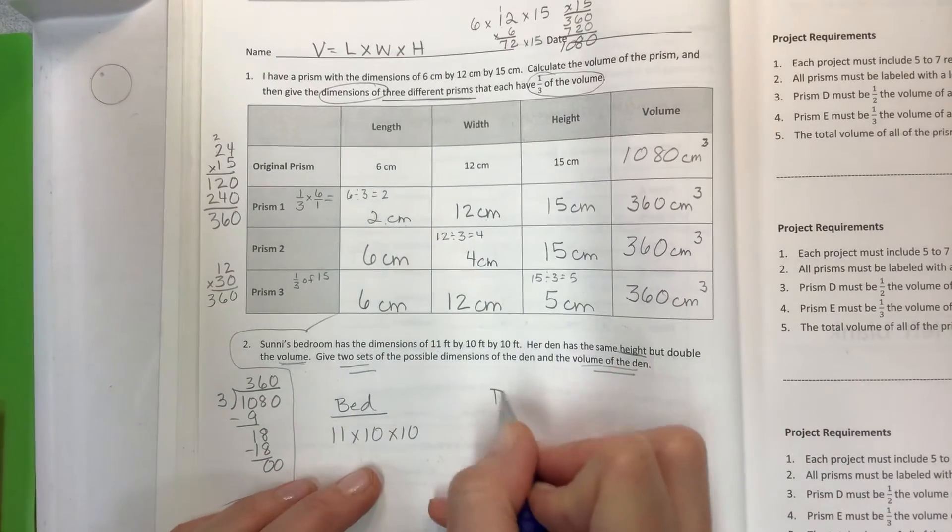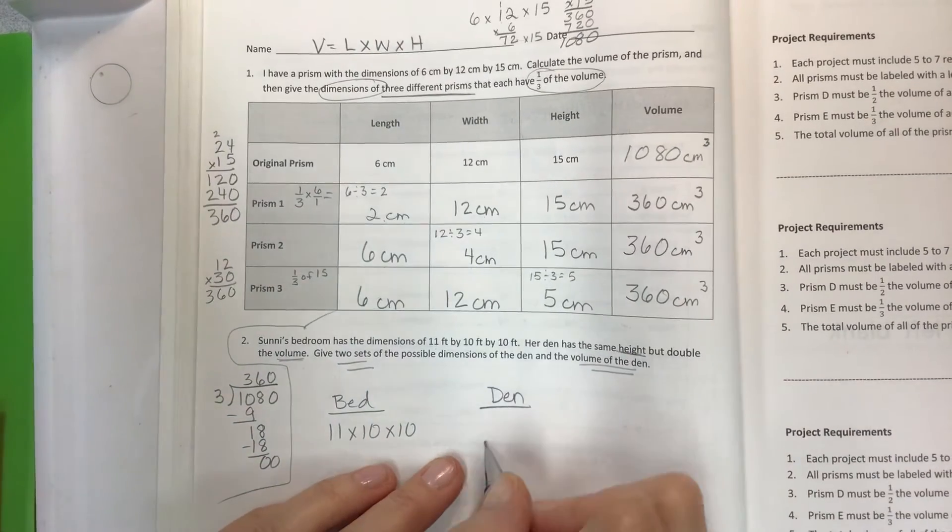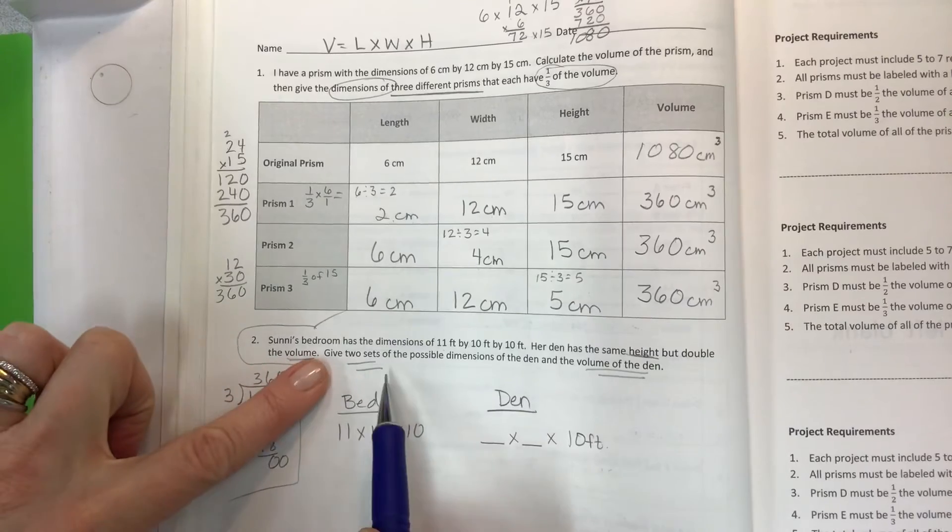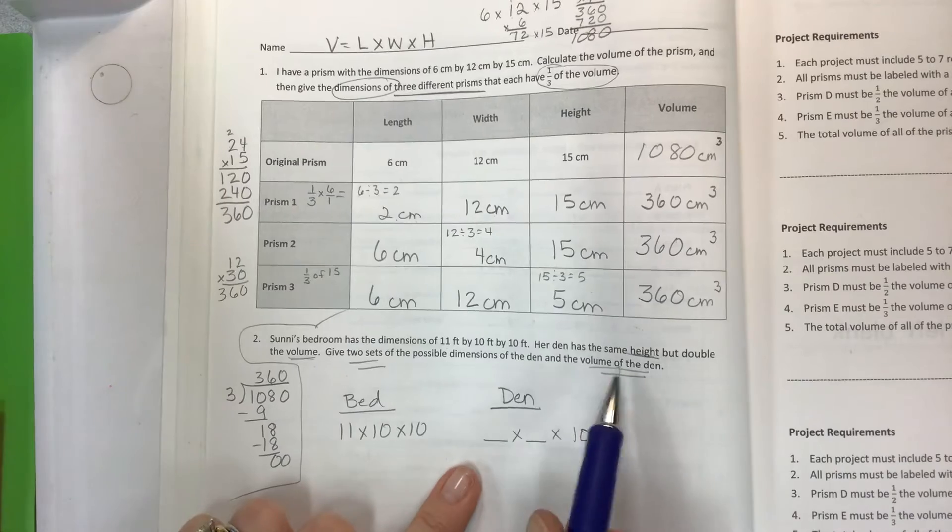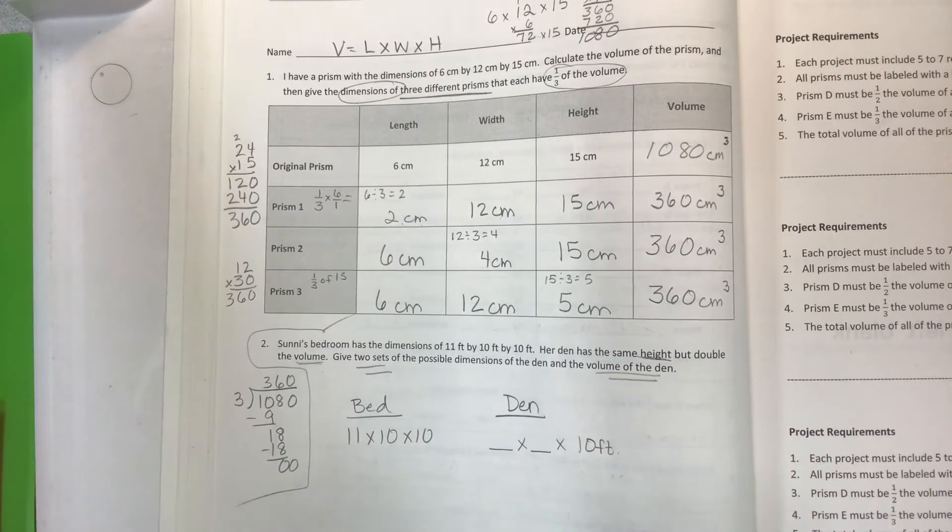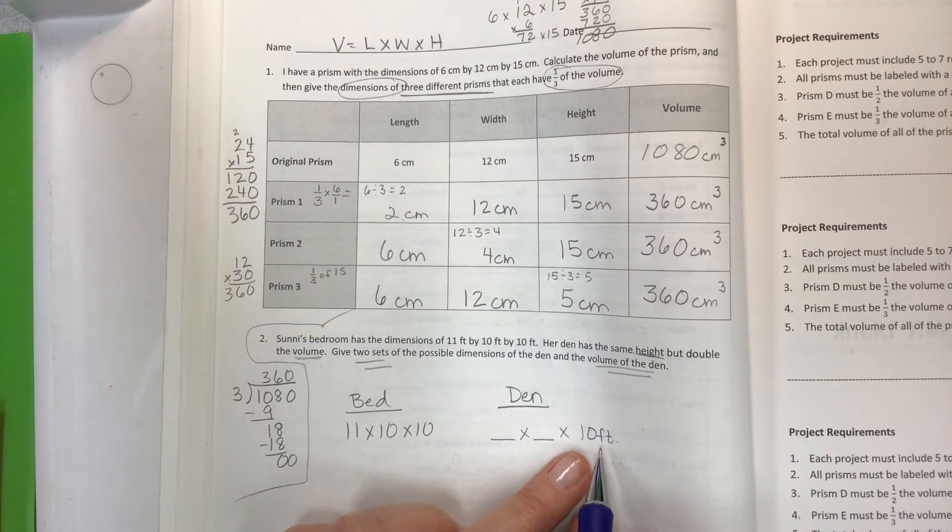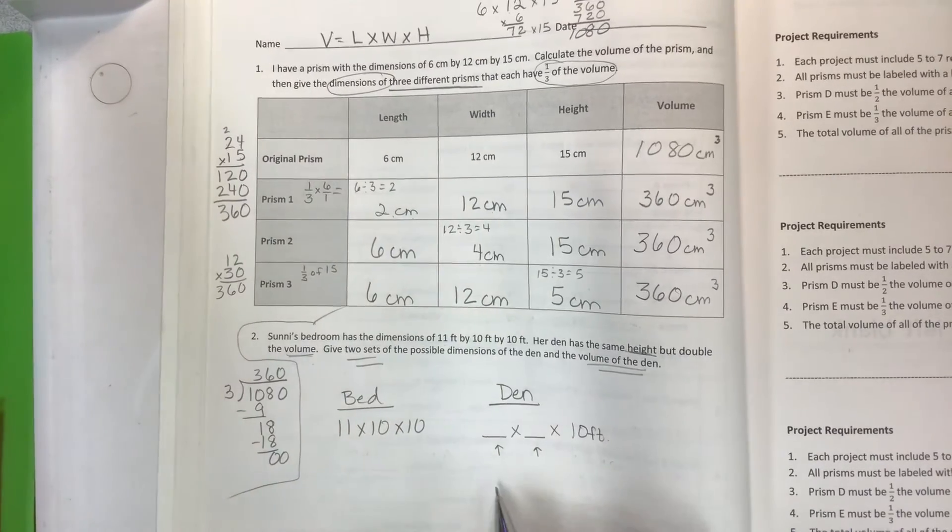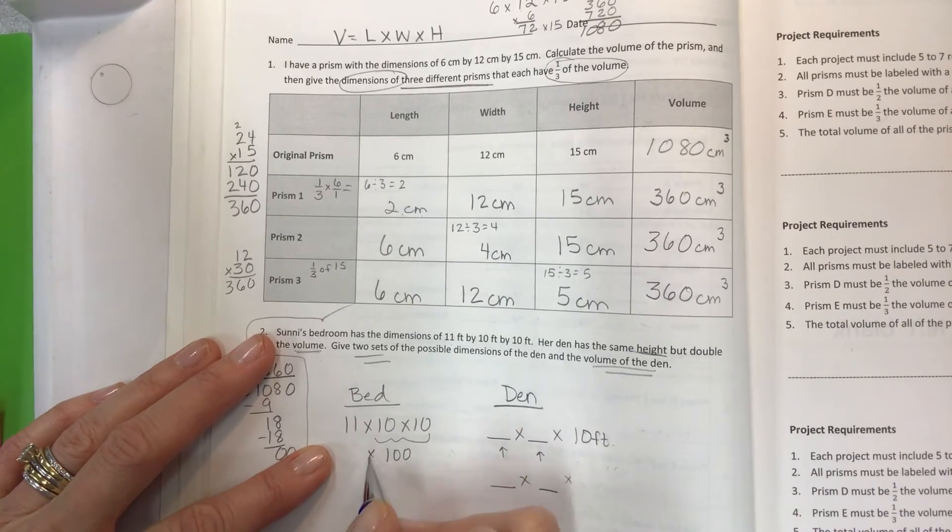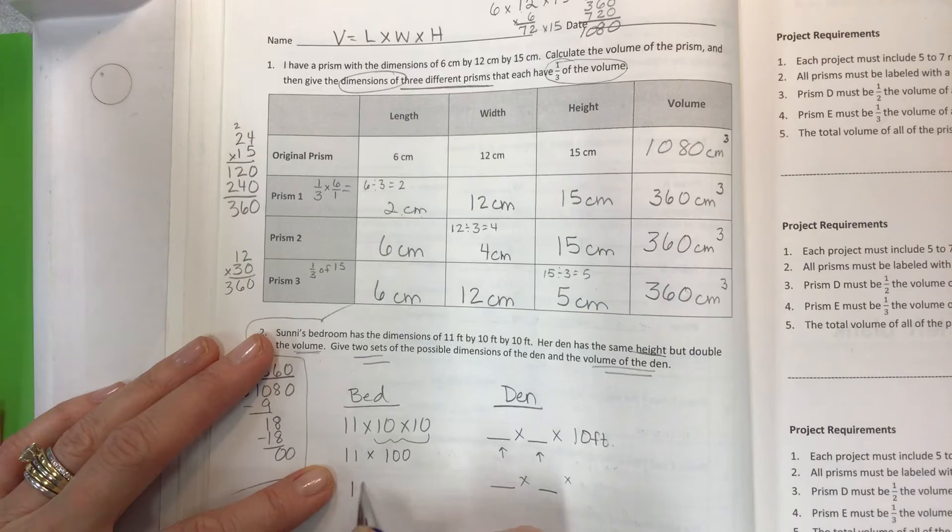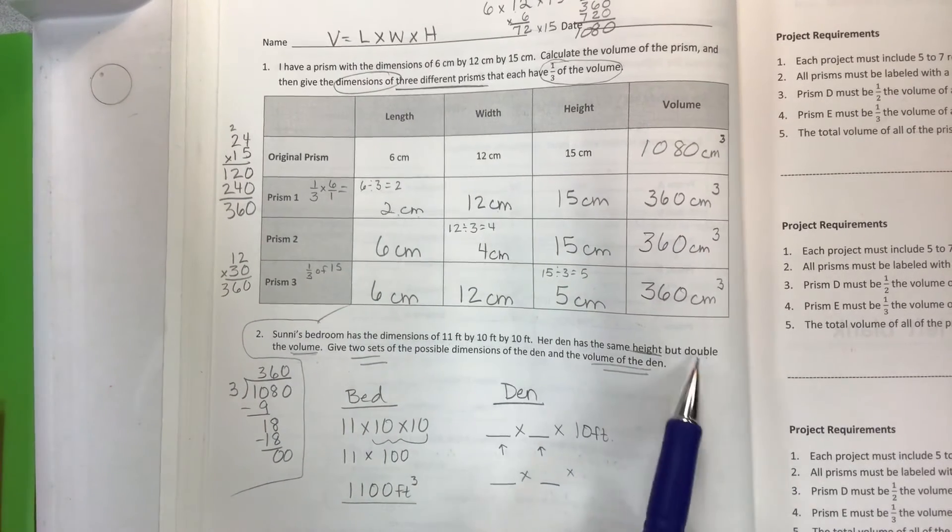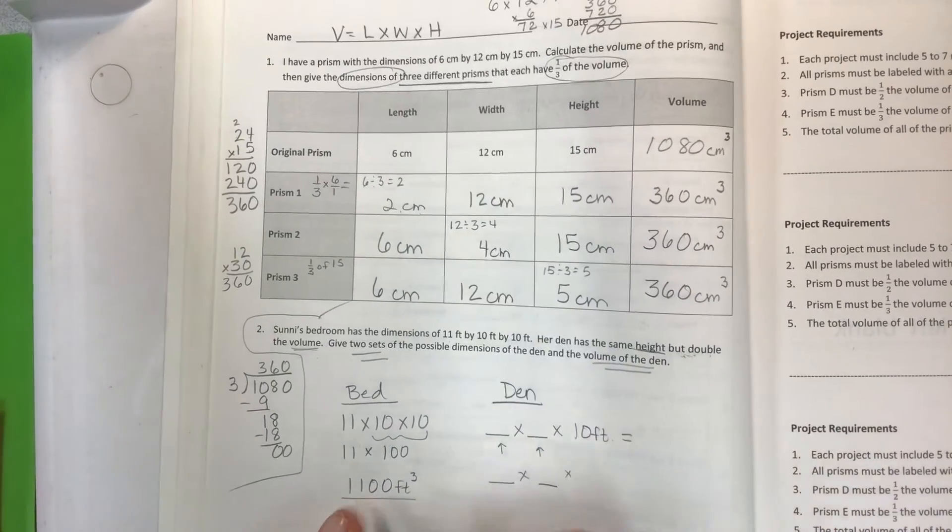Okay, and the den separated out. It has the same height, so we've got length times width times height, and the height is going to be 10. Give two sets of possible dimensions of the den and the volume of the den. We need to only change one number at a time because the 10 feet is going to stay the same, but I've got my two choices here. So if I take my 100 and then I have 11 times 1 is 11 feet cubed, and we want to double the volume. Okay, so we know that our volume is 2200.